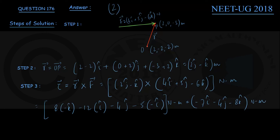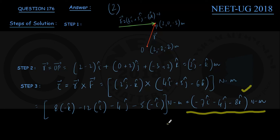Therefore, the moment of the force about the given origin is −7i − 4j − 8k newton-meter. This matches option number 2, so we conclude that option number 2 is the correct option. That is the end of this question.